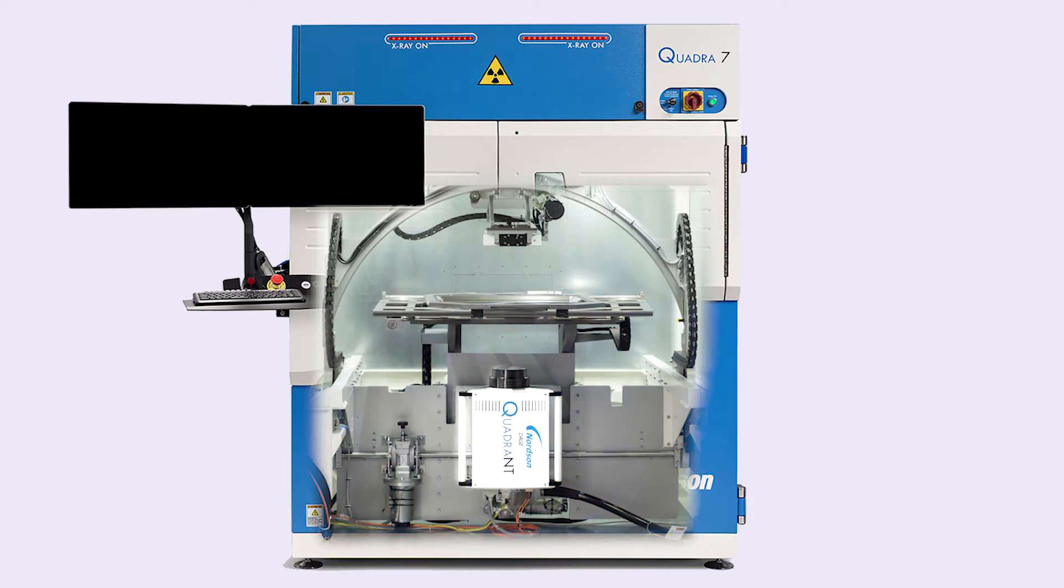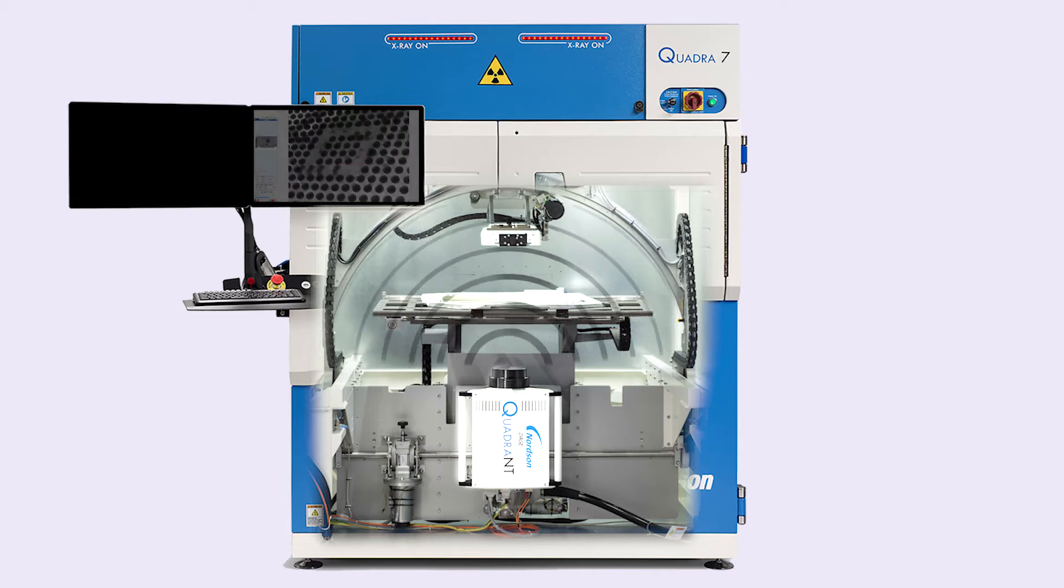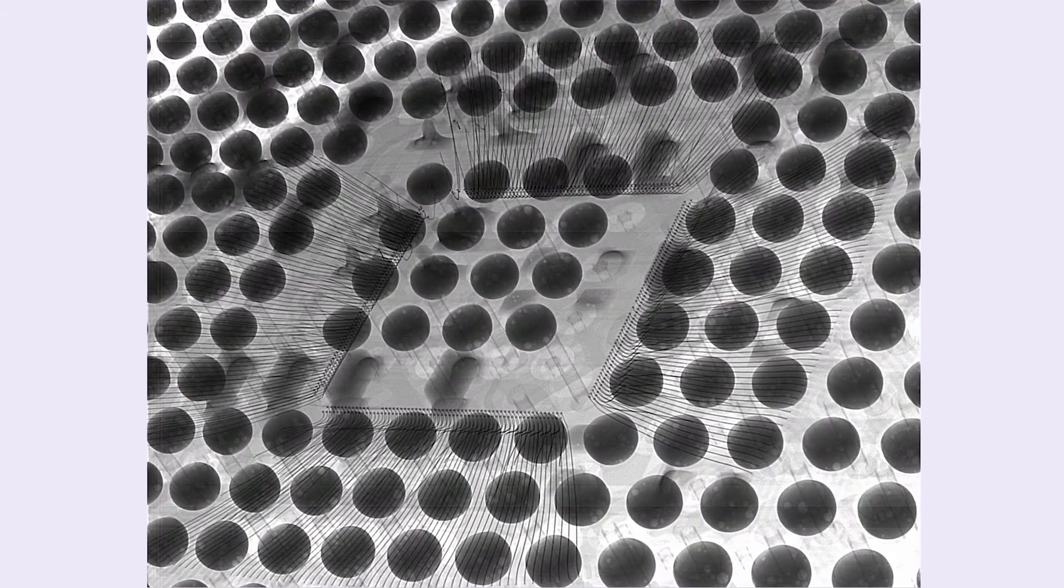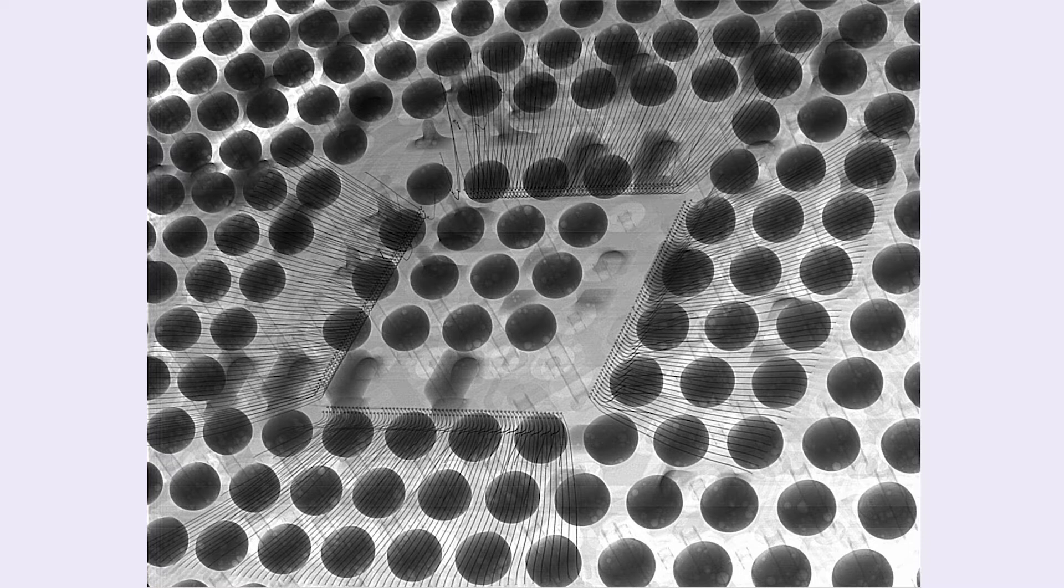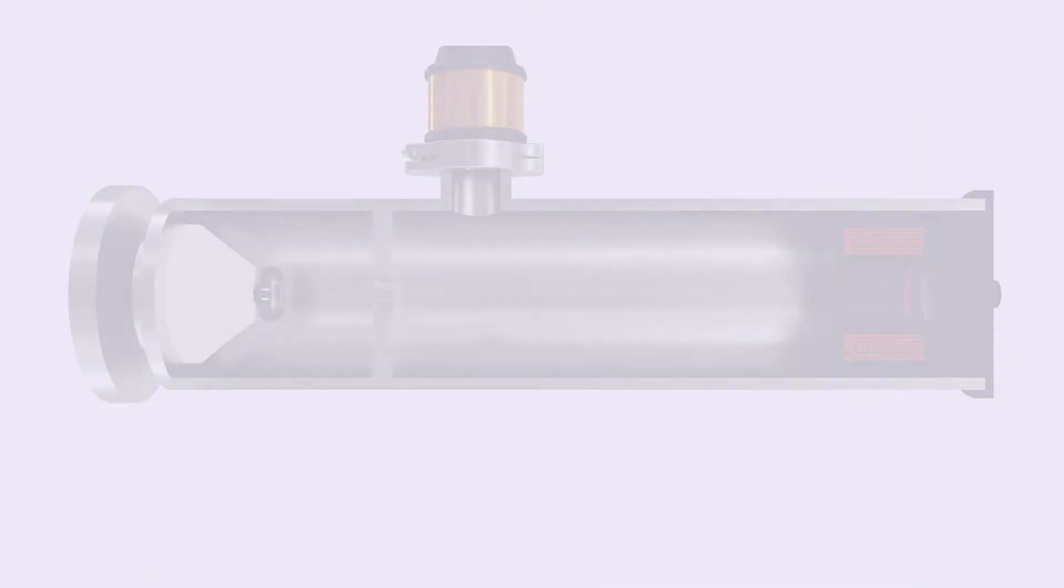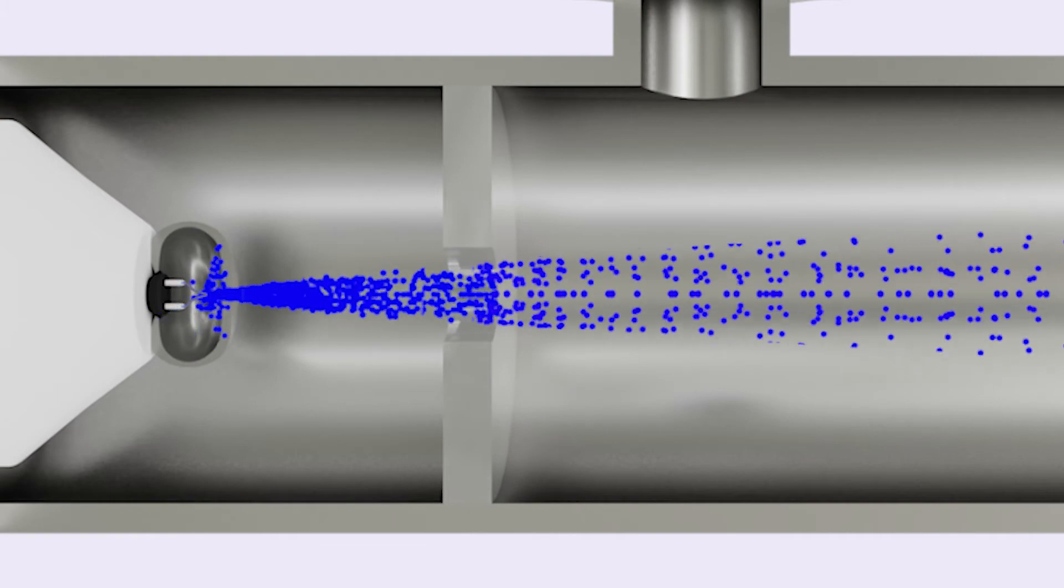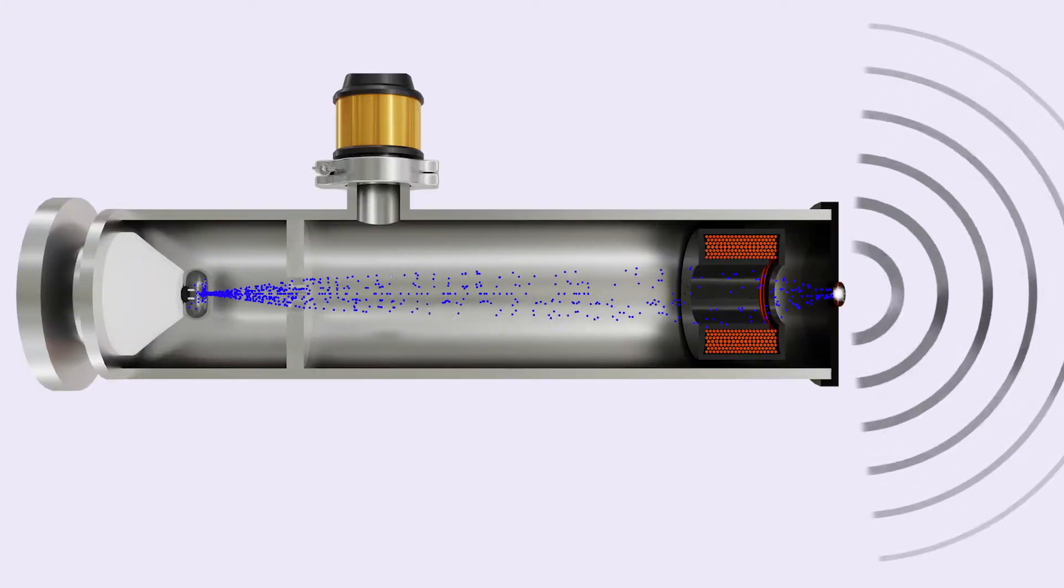The x-ray tube is the heart of any inspection system. X-ray shadows created by the sample reveal everything inside. For the clearest images, the highest quality x-rays are required. X-ray tubes take electrons and accelerate them into a heavy metal target.